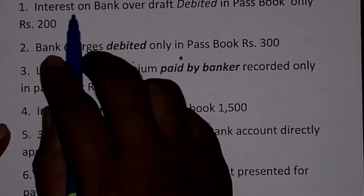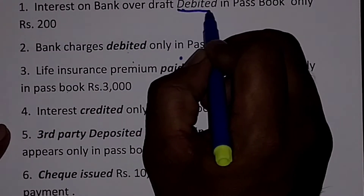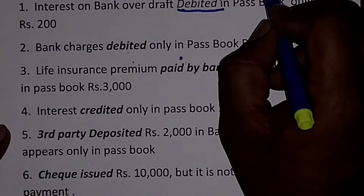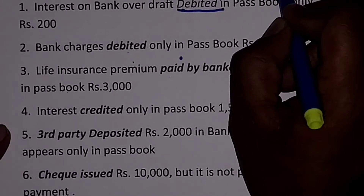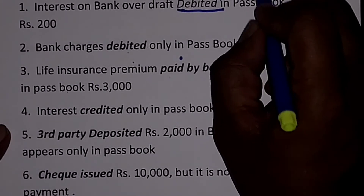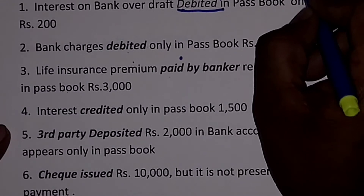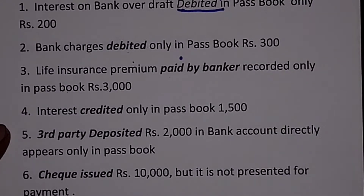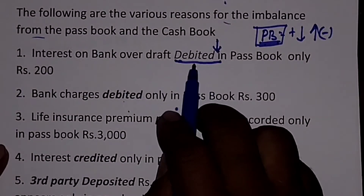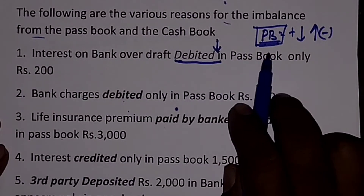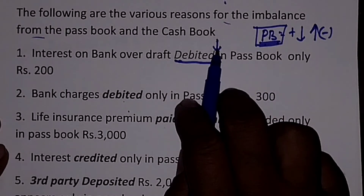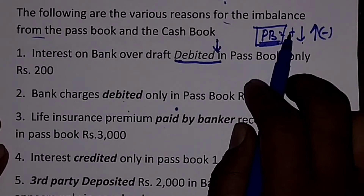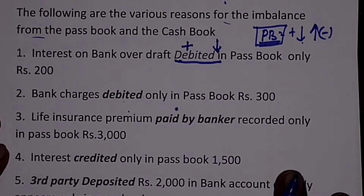The first entry is interest on bank overdraft debited. As I told you, 'debited' means decrease in pass book. As per this problem, I am starting with pass book as first. Therefore, decrease in pass book will become plus. So 'debited in pass book' is a plus item.